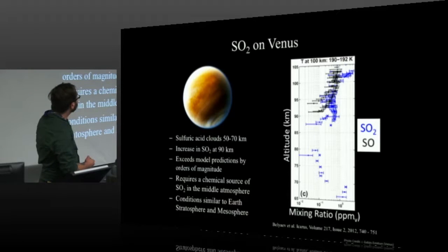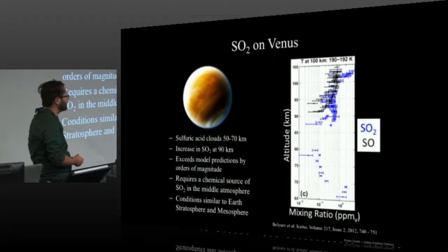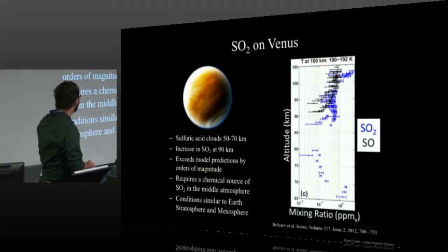But so if we go to Venus, Venus tells us something pretty interesting. Because there's huge amounts of sulfur in Venus's atmosphere, about from 50 to 70 kilometers, there's this large sulfuric acid cloud that covers the entire planet. But interestingly, starting at about 90 kilometers, there's a huge increase in SO2 and sulfur monoxide concentration, several orders of magnitude change. And this actually exceeds any model predictions by multiple orders of magnitude. And so what this tells us, there's probably some sort of chemical formation of SO2 in the middle atmosphere of Venus.